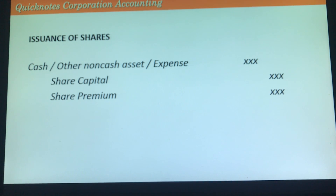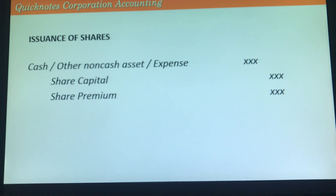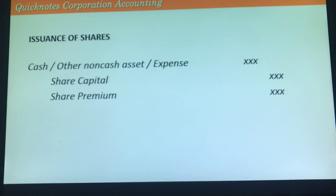For non-cash assets, we always record the acquisition cost or fair value of the asset. If those amounts are not available, the non-cash asset is measured at the fair value of the shares; if that is also unavailable, our last option is the par value of the shares. The same applies to expenses — we debit the expense amount, or in its absence use the fair value of the shares, and lastly the par value. We then credit share capital by multiplying the number of shares issued by par value. Any excess between the cash, cost of asset, or expense paid will be credited to premium.